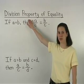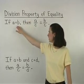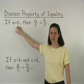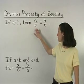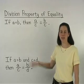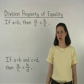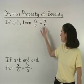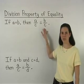The division property of equality states that if A equals B, then A divided by C equals B divided by C. In other words, we can always divide by the same quantity on both sides of an equation.